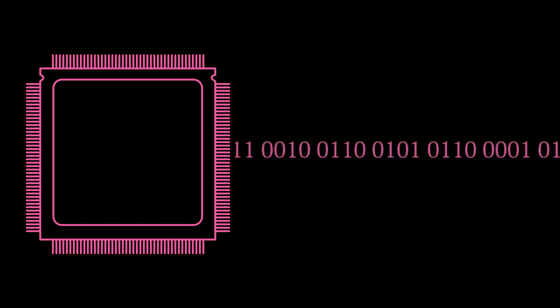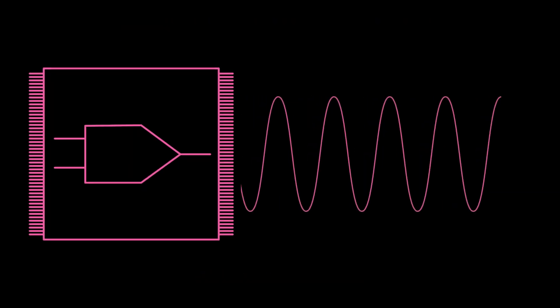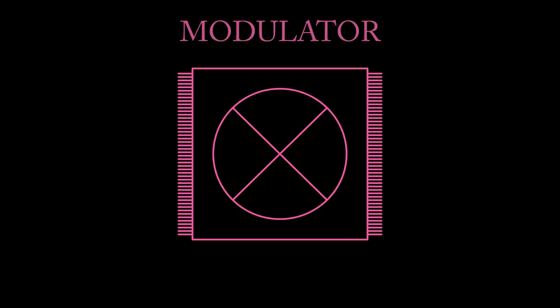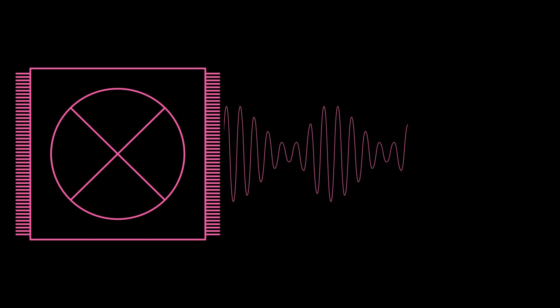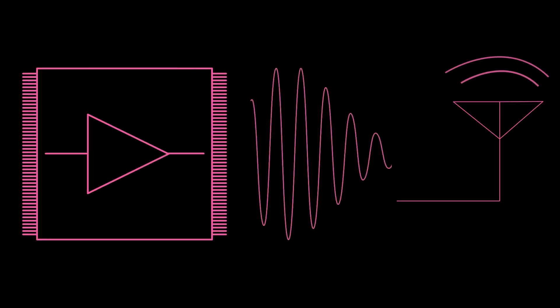When it's time to send a picture, the processor will package the bits and send them out as a changing voltage with a device known as a digital to analog converter, which converts the bits into an analog signal. The analog signal then goes into a device known as a modulator that packages the signal into a carrier signal to facilitate the transmission by controlling the frequency, so it does not interact with other signals in the same frequency range. It then proceeds into a device known as an amplifier that will increase the signal strength, and finally gets transmitted via the antenna.